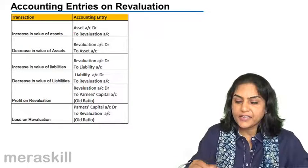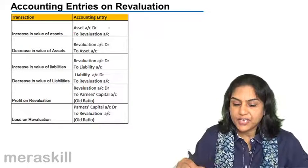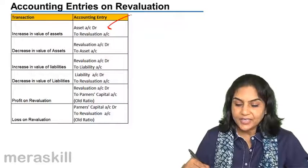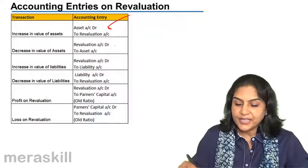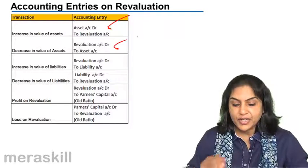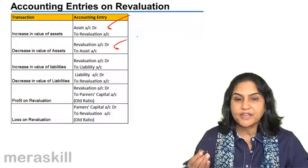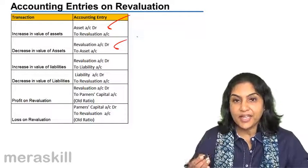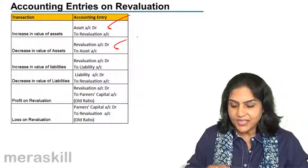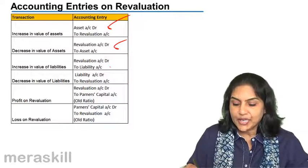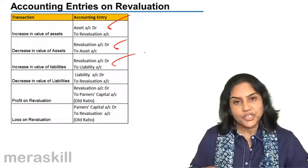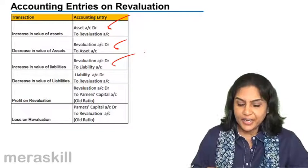To recap: increase in the value of an asset — asset account debit to revaluation. Decrease — credit asset, debit revaluation. Increase in the value of liability — if liabilities increase, liability has to be credited and revaluation account is debited.